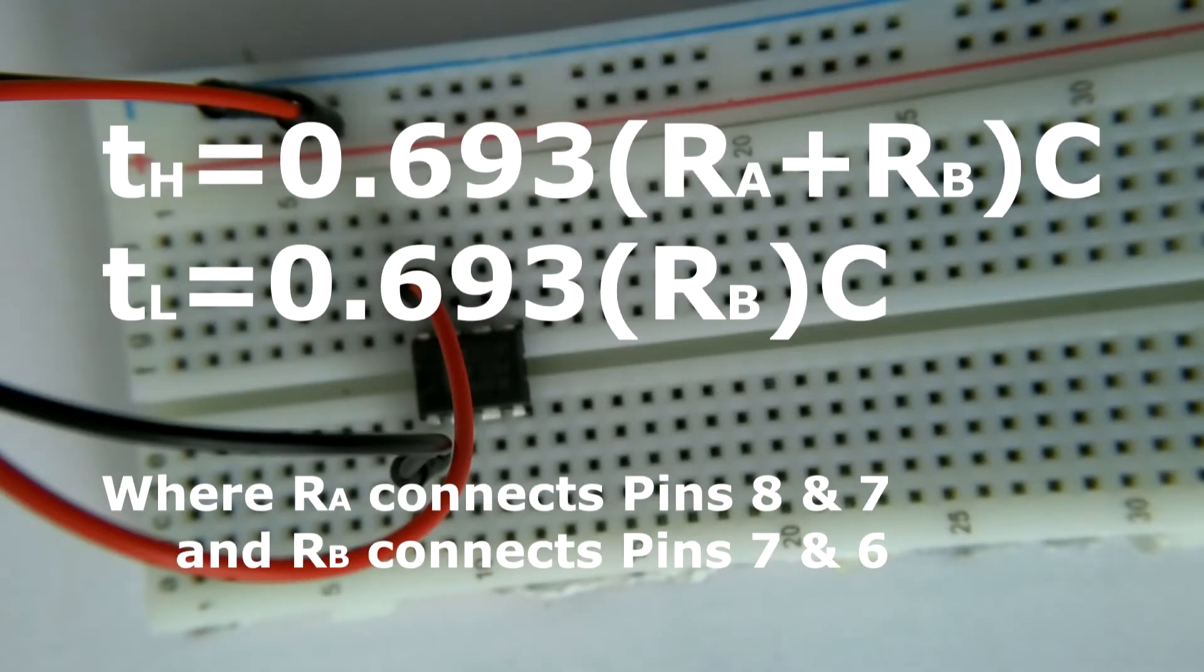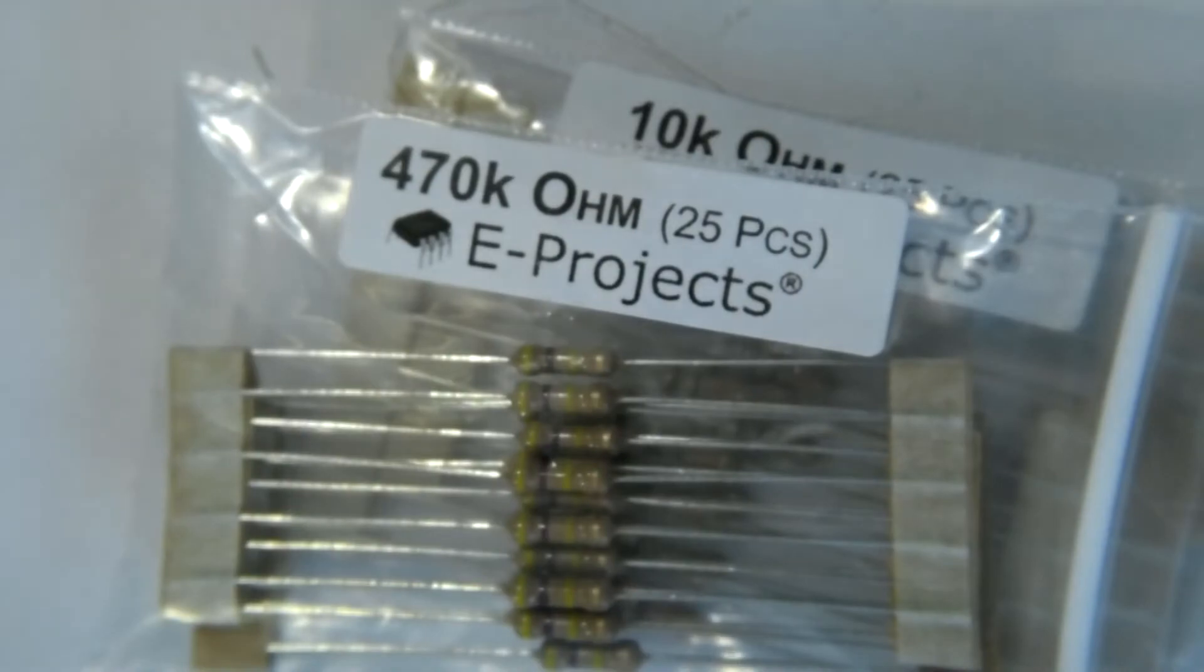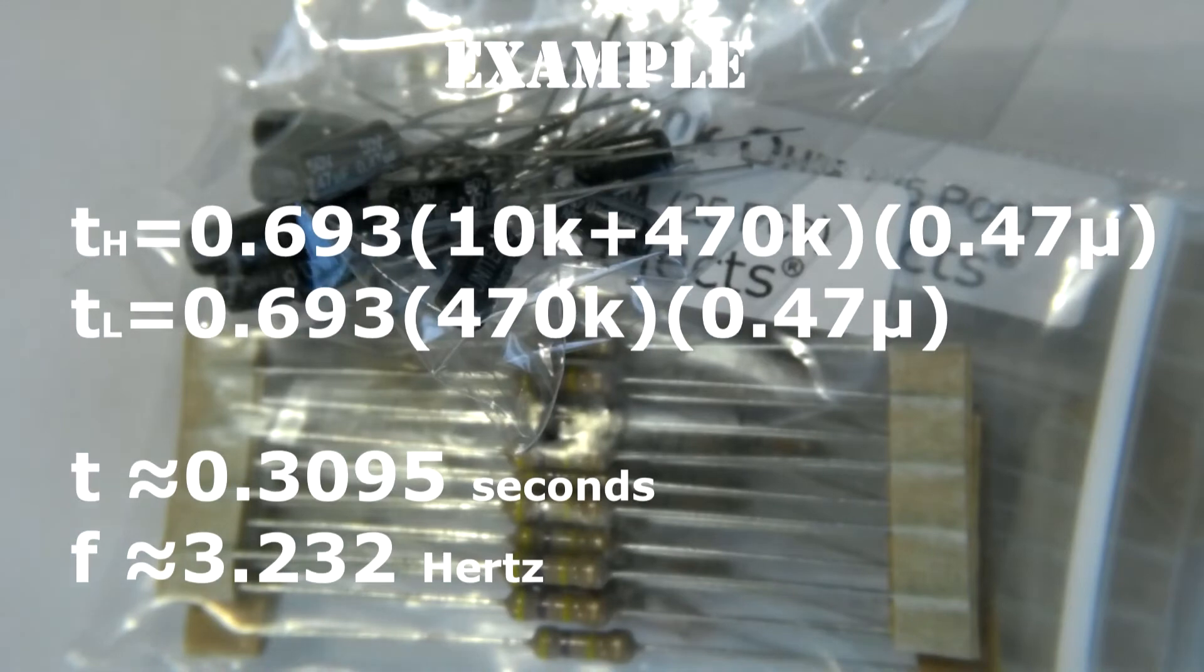Pin 7 and 6 control the timing. This is done using a pair of resistors and a capacitor. I decided to make RA a 10kohm resistor, RB a 470kohm resistor, and my capacitor a 0.47 microfarad capacitor. Therefore I will have a frequency of about 3Hz.